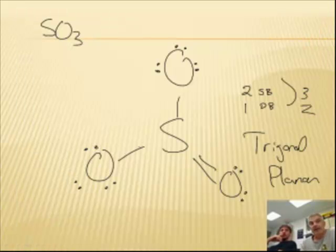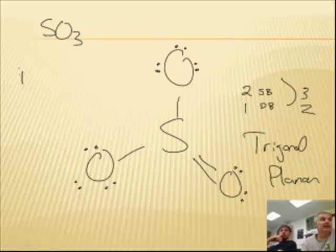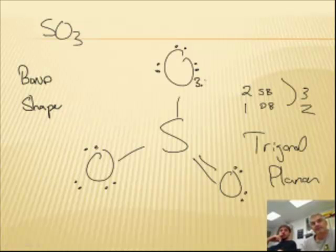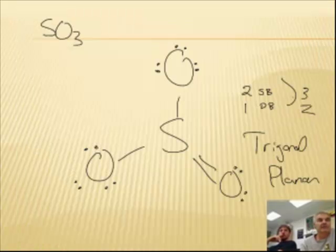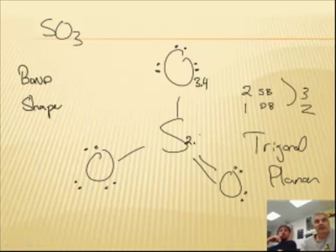And then for sulfur trioxide, we're going to do the bond check and then the shape check. So bond first. This is 3.4, and sulfur is 2.6. Well that difference is 0.8, so it passes the bond check.